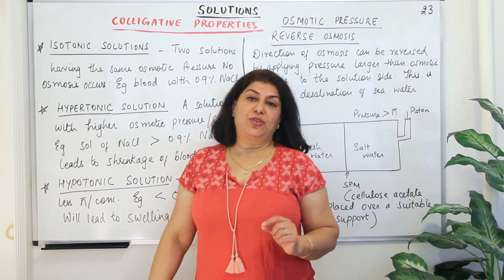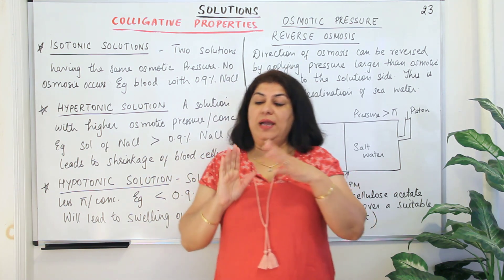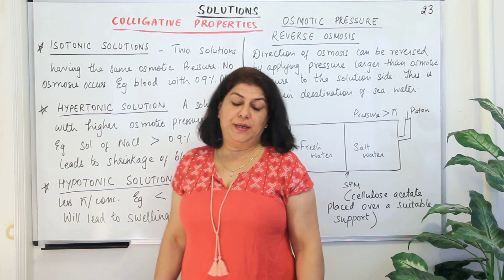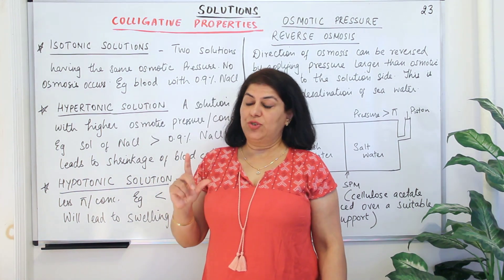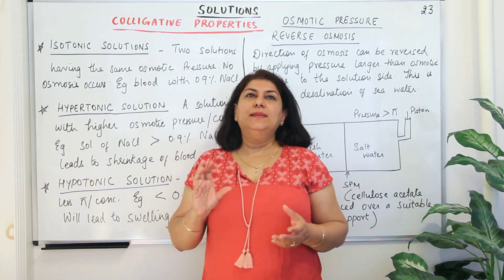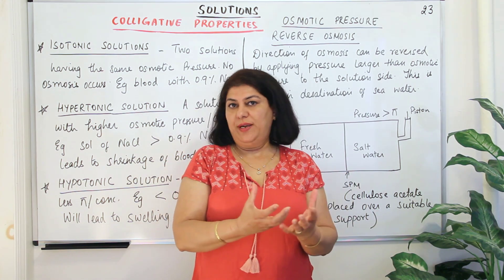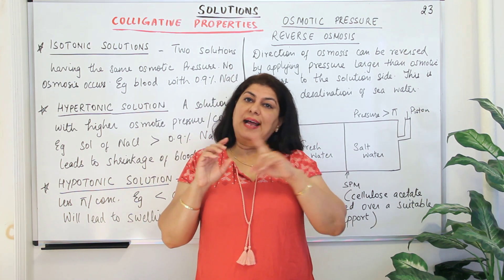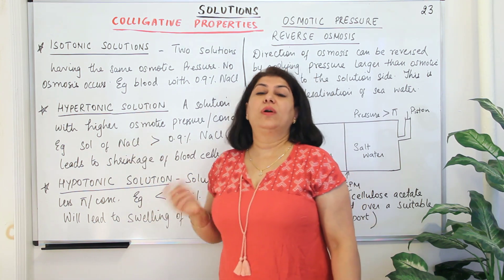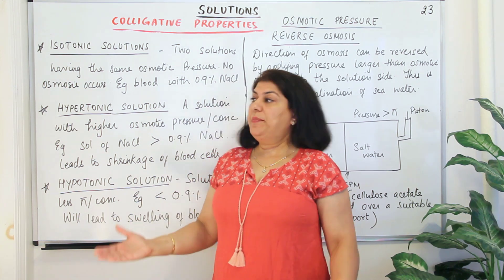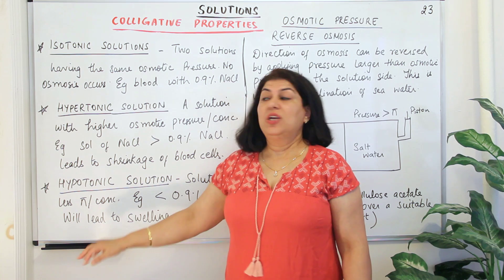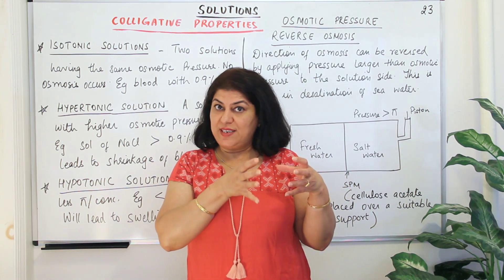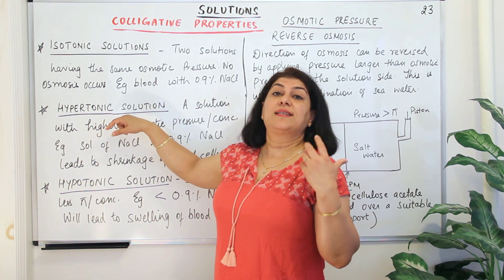The next category is a hypertonic solution. Out of the two solutions, we take one as the main one. Whether the concentration of the other solution is lower or higher decides the other two categories — hypertonic and hypotonic. Hyper means higher and hypo means lower. A solution which has more osmotic pressure or more concentration than the solution you are focusing on inside the semi-permeable membrane is known as a hypertonic solution.